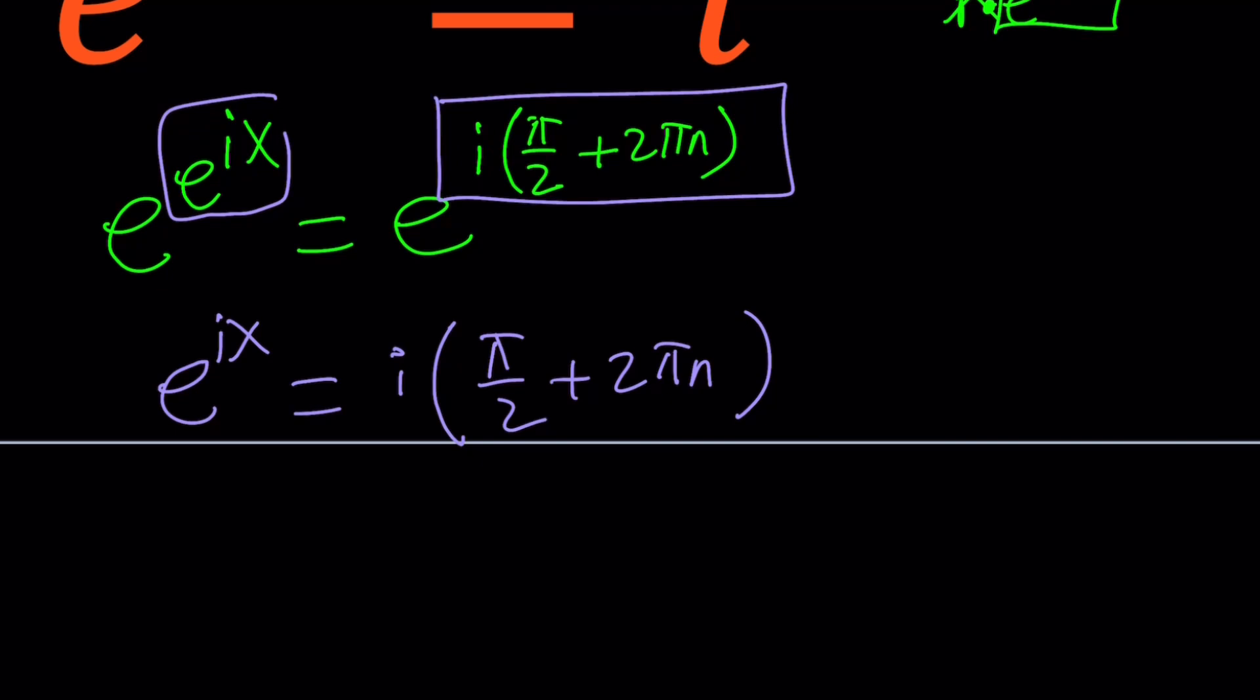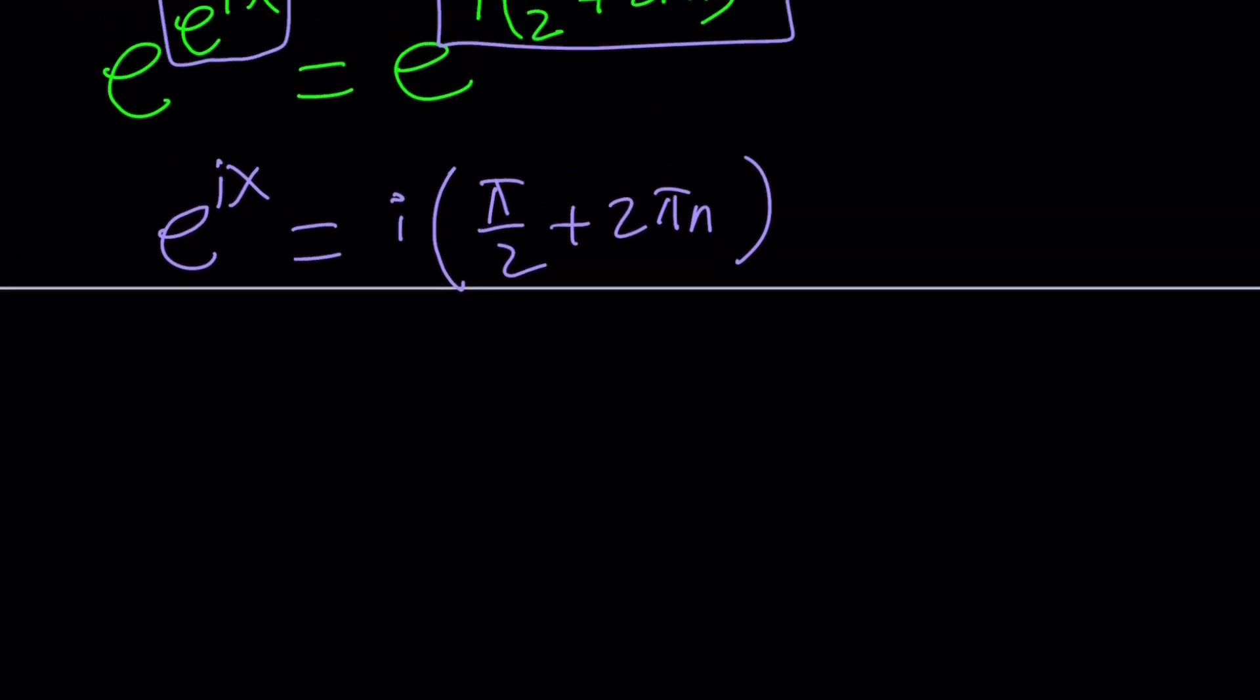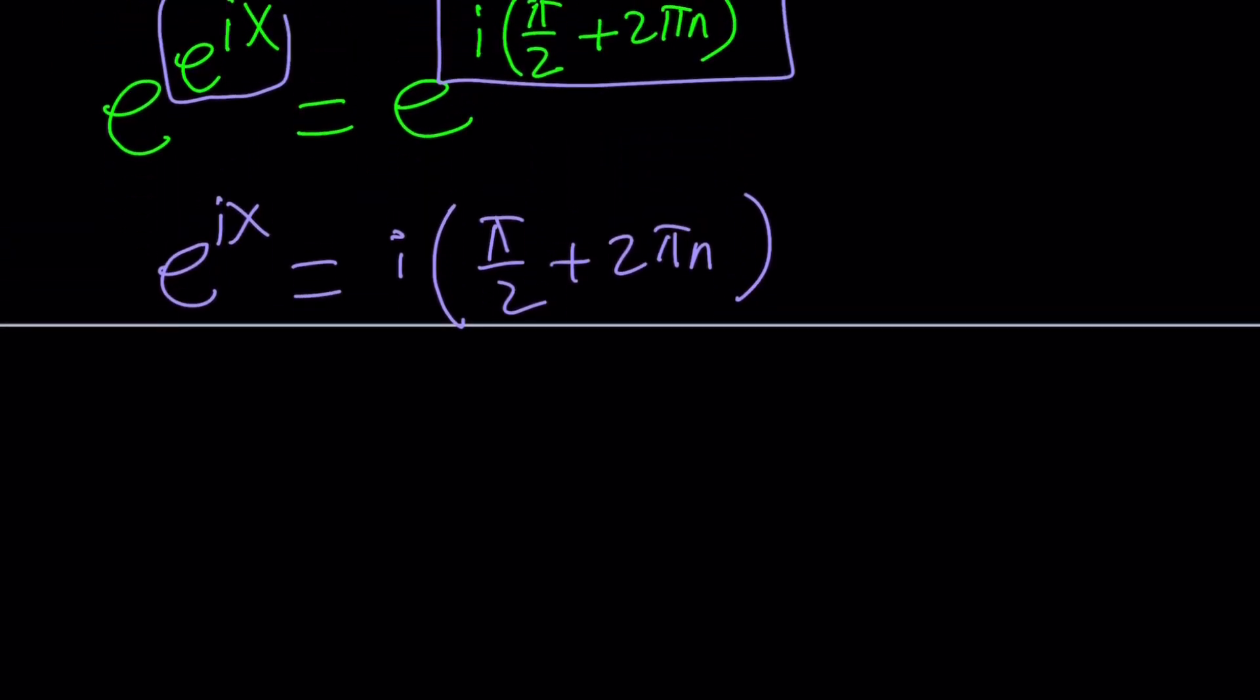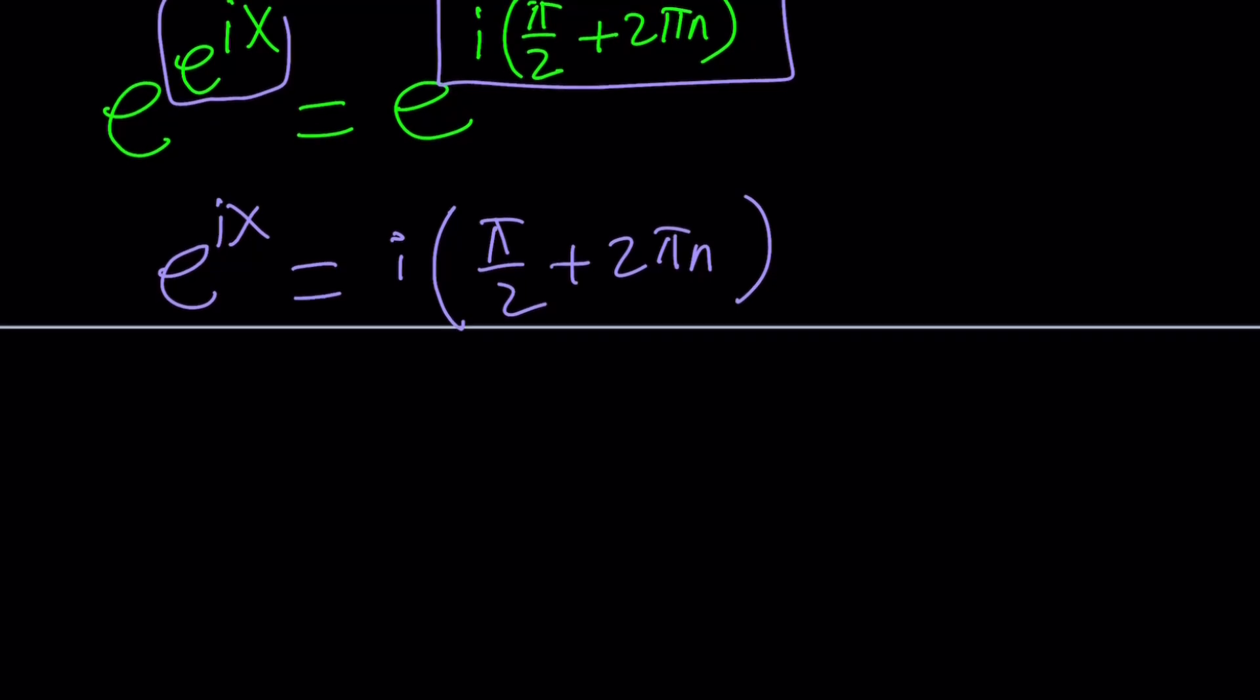But we got a power of e again, right? And hopefully you know what e to the power of ix means. It's actually something in polar form, but that's another story. Let's not get distracted by that. And we're going to be using logs one more time, the natural logs. But before that, let's go ahead and write the right-hand side in polar form again.